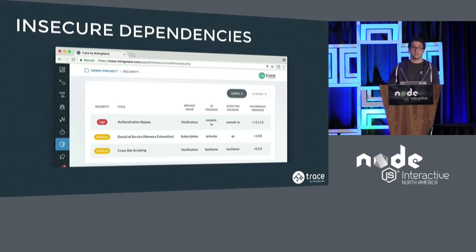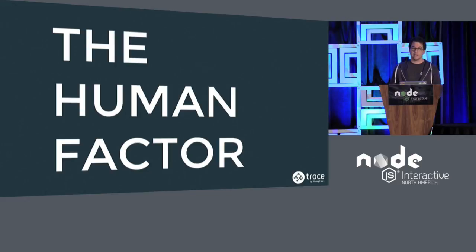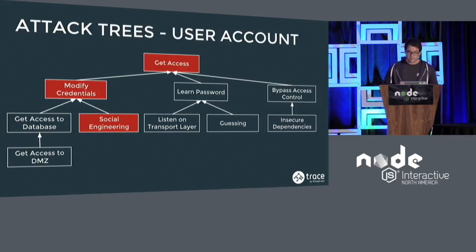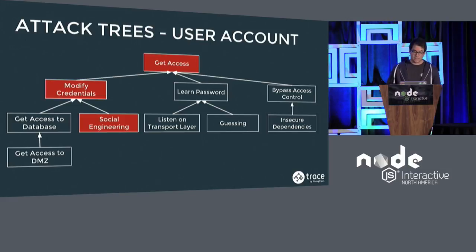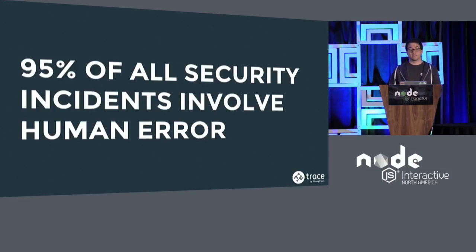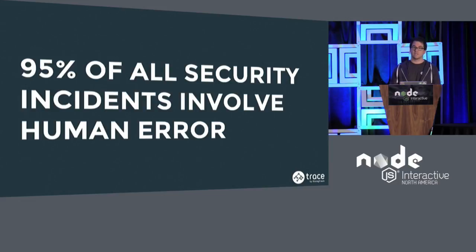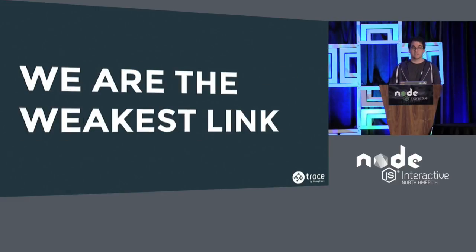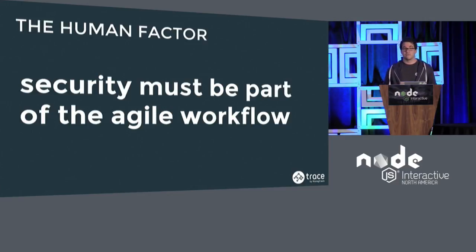Which brings us to the last thing I wanted to mention — one of the most important ones: the human factor in security. From the attack tree, credential modification done via social engineering is a human error. What was quite surprising to me was that more than 95% of all security incidents involve some kind of human error — something was forgotten, or something was not coded the way it should be. So it's safe to say that in our security chain, we are the weakest link. Because of this, security must be part of the agile workflow you are working on every day.